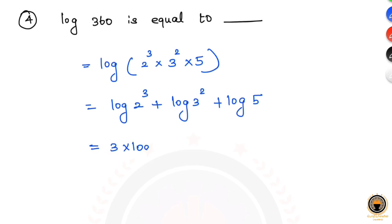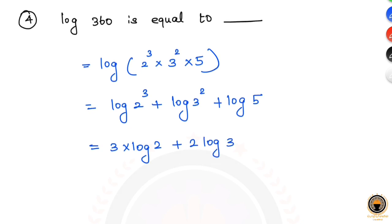So the expansion gives 3 times log 2 plus 2 times log 3 plus log 5. This is the answer, and the fourth option is the correct option.